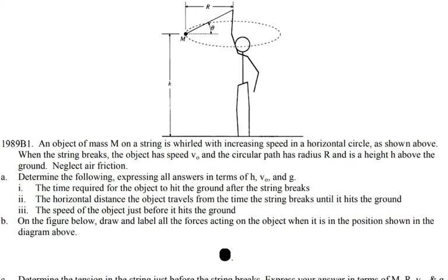The first part asks for the time required for the object to hit the ground after the string breaks. Let me write the information that is given: the mass of the object, the radius of rotation, the height, and the acceleration g. Since I know the acceleration and the distance it will travel, we can use the DA formula — I'm going to derive it for you.